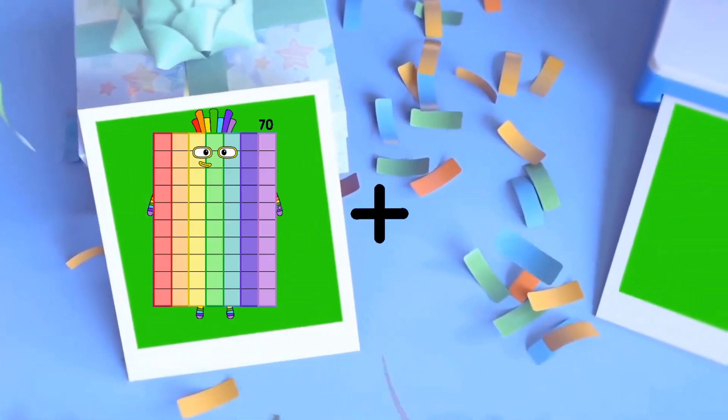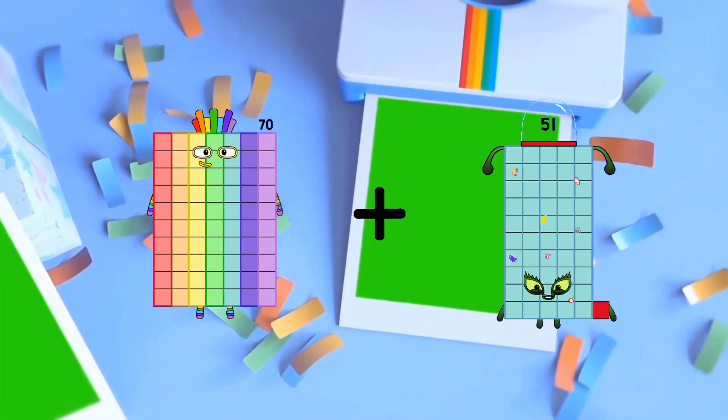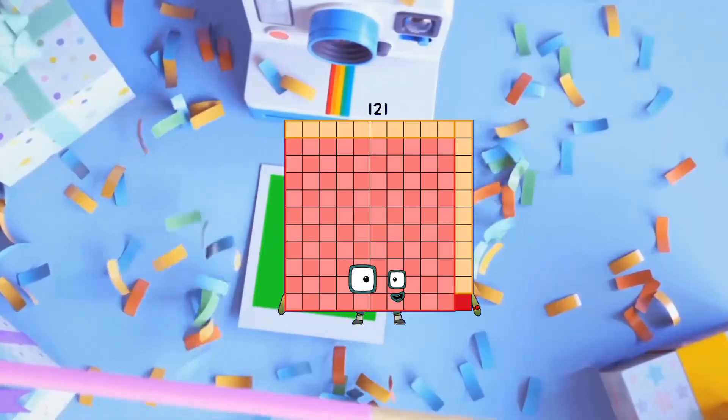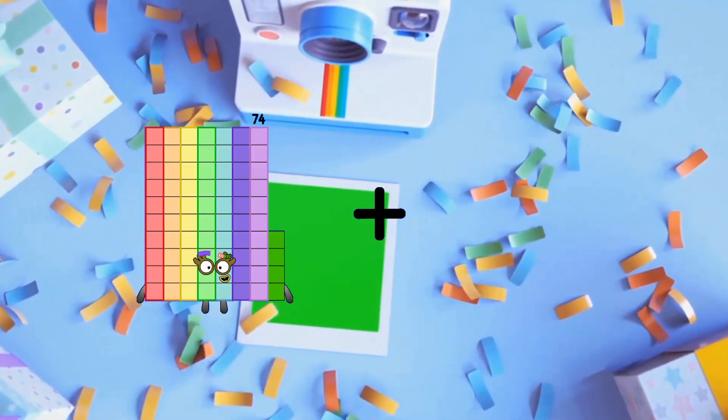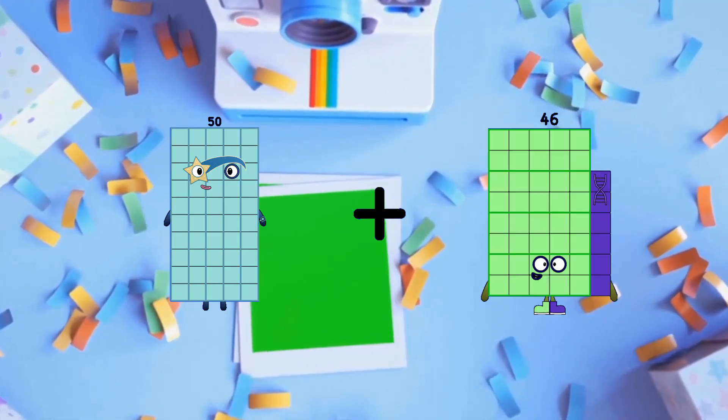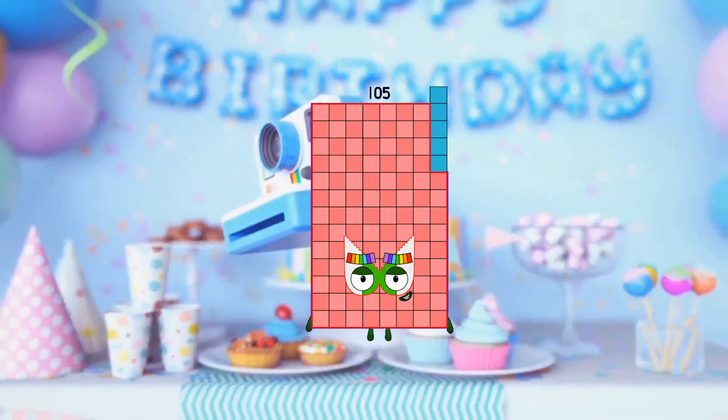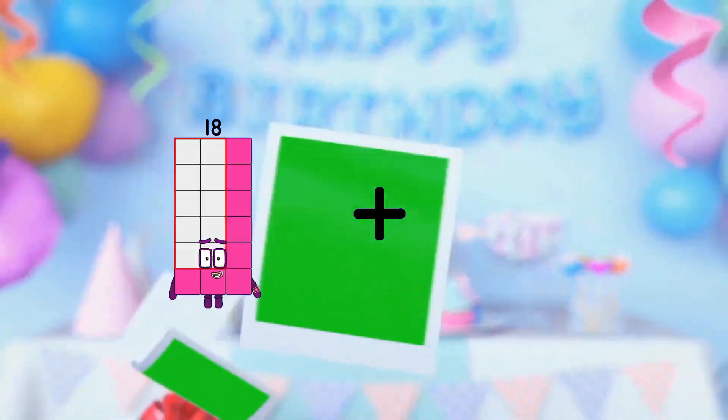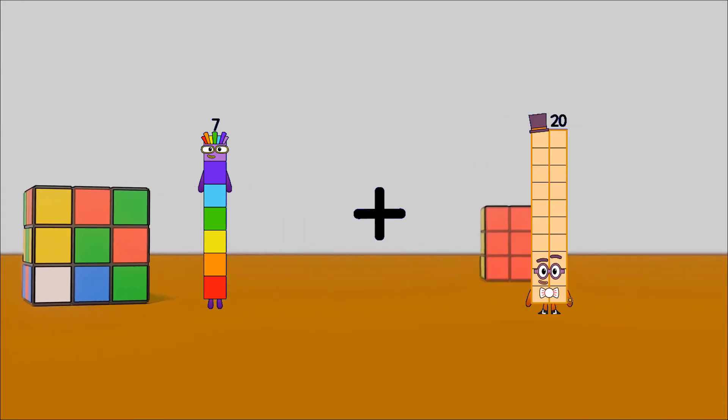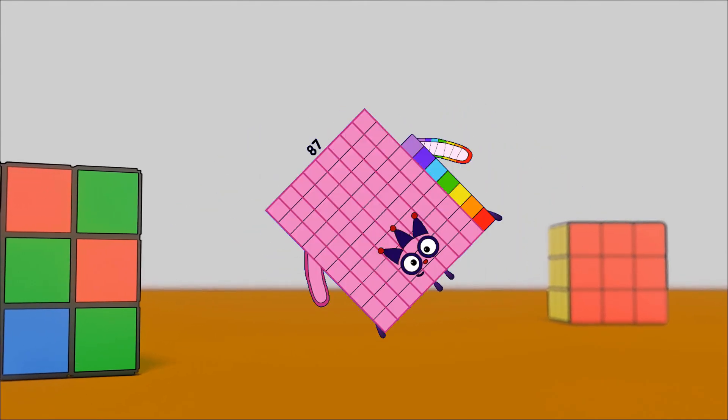70 plus 51 equals 121. 50 plus 55 equals 105. 75 plus 80 equals 87.